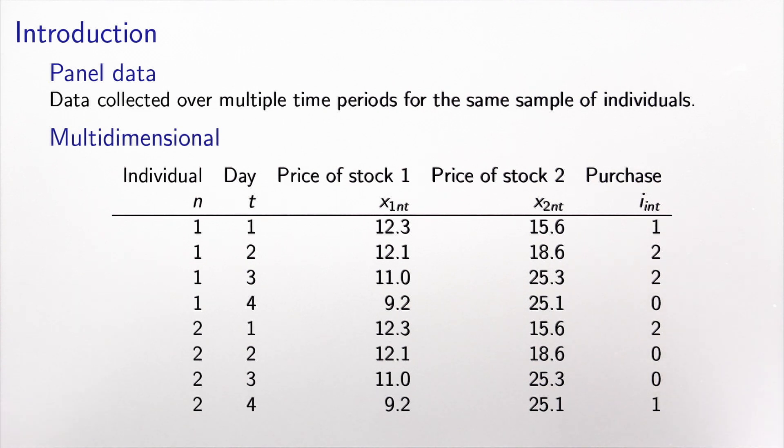This is a typical representation of panel data. We have an index for the individuals that we denote by n, and an index for time. Time can be minutes, hours, days, months, depending on the context. Then for each individual and each period of time, we have the values of the explanatory variables x and the value of the choice i. As you can see, both x and i have two indices, n and t.